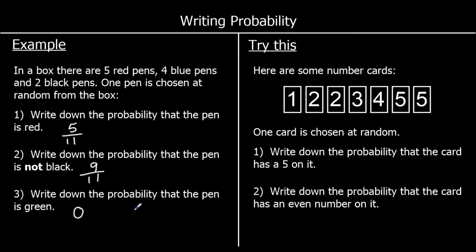And one for you to try. Here are some number cards. One card is chosen at random. Write down the probability that the card has a five on it. There are two cards with a five, out of seven cards in total, so the probability of getting a five is two sevenths. Write down the probability that the card has an even number on it. There are three even numbers out of seven cards, so the probability is three sevenths.